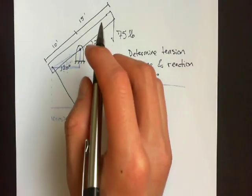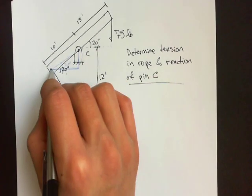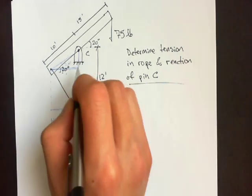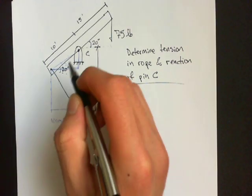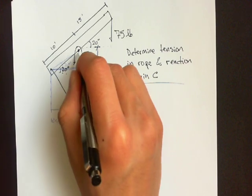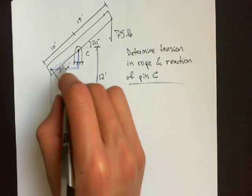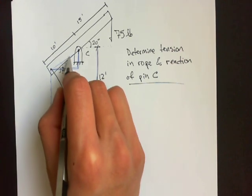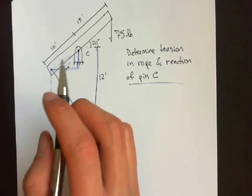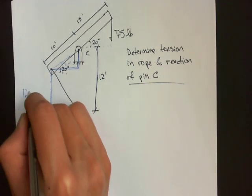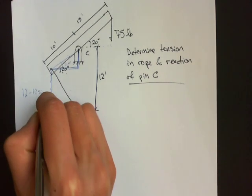And over here, we can also draw our second triangle. I mean, excuse me, it's the first triangle, but this distance is equal to 12 minus this leg. And this leg is equal to 10 opposite over hypotenuse, so 10 sine 20. So this distance is equal to 12 minus 10 sine 20.